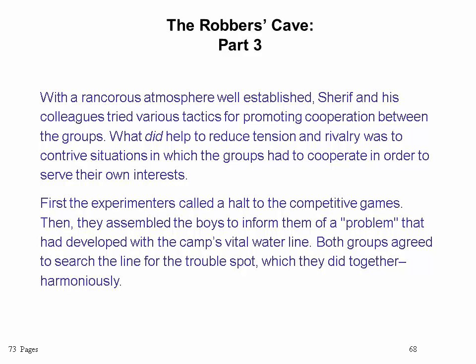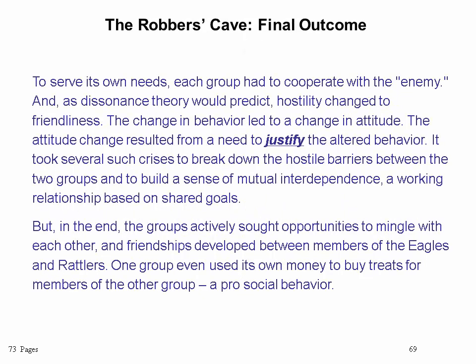At this point, where most other experiments stopped, Sharif wanted to find out how to get the two groups back together again — what would promote cooperation? What did help to reduce tension and rivalry was contriving situations in which the groups had to cooperate in order to serve their own interests. The experimenters called a halt to the competitive games, then assembled the boys to inform them of a problem that had developed with the camp's vital water line. The boys thought they were out in the middle of nowhere — you cannot survive without water — so both groups agreed to search the line for the trouble spot, which they did together harmoniously.